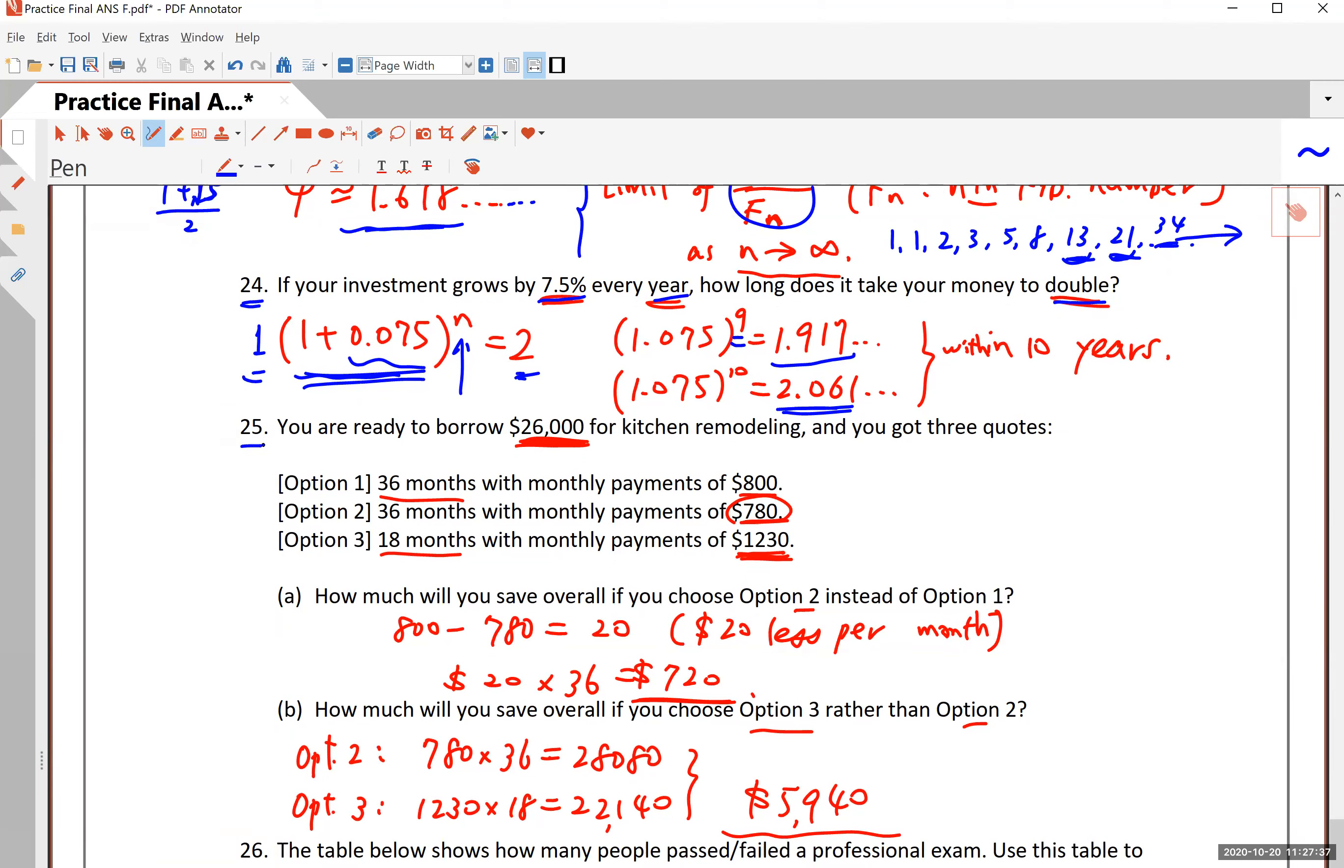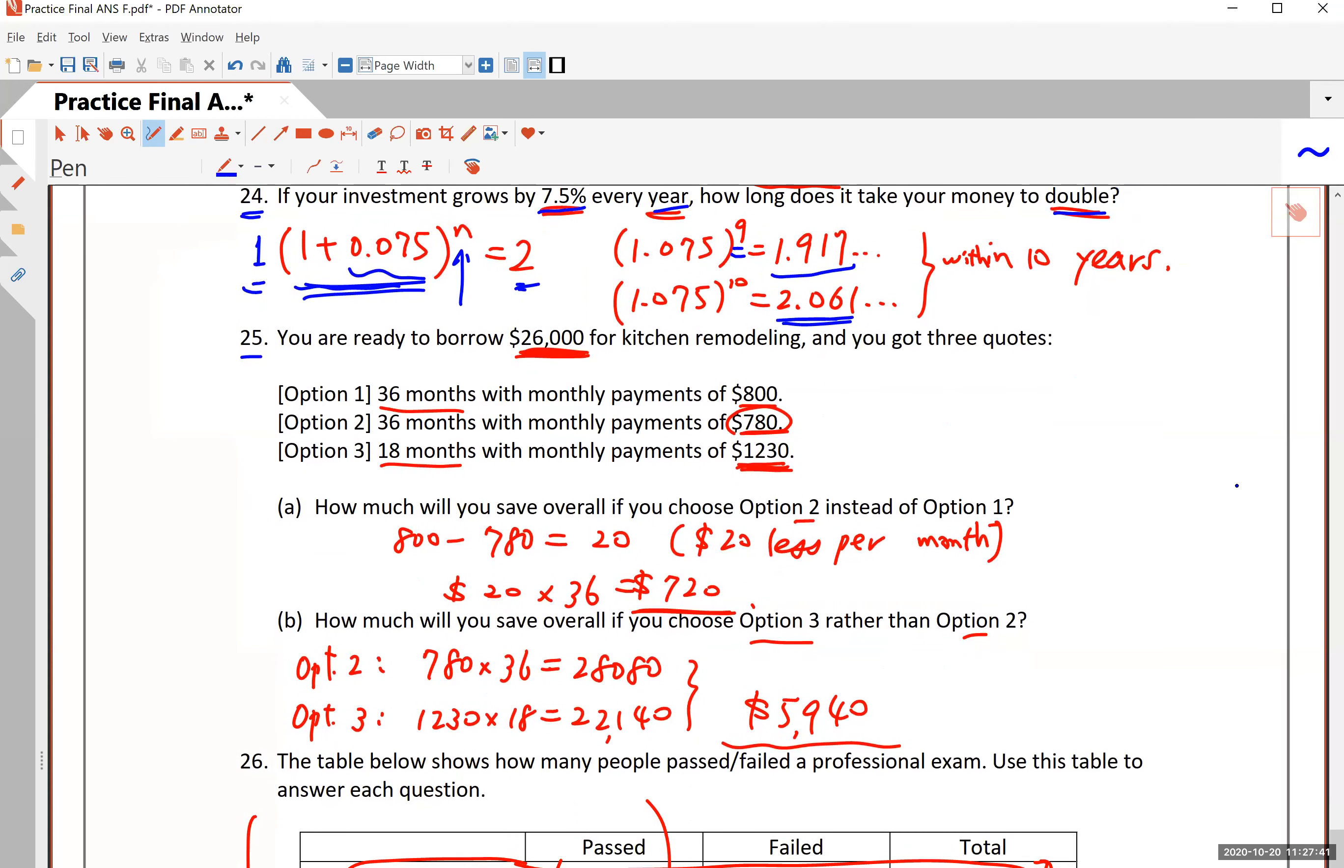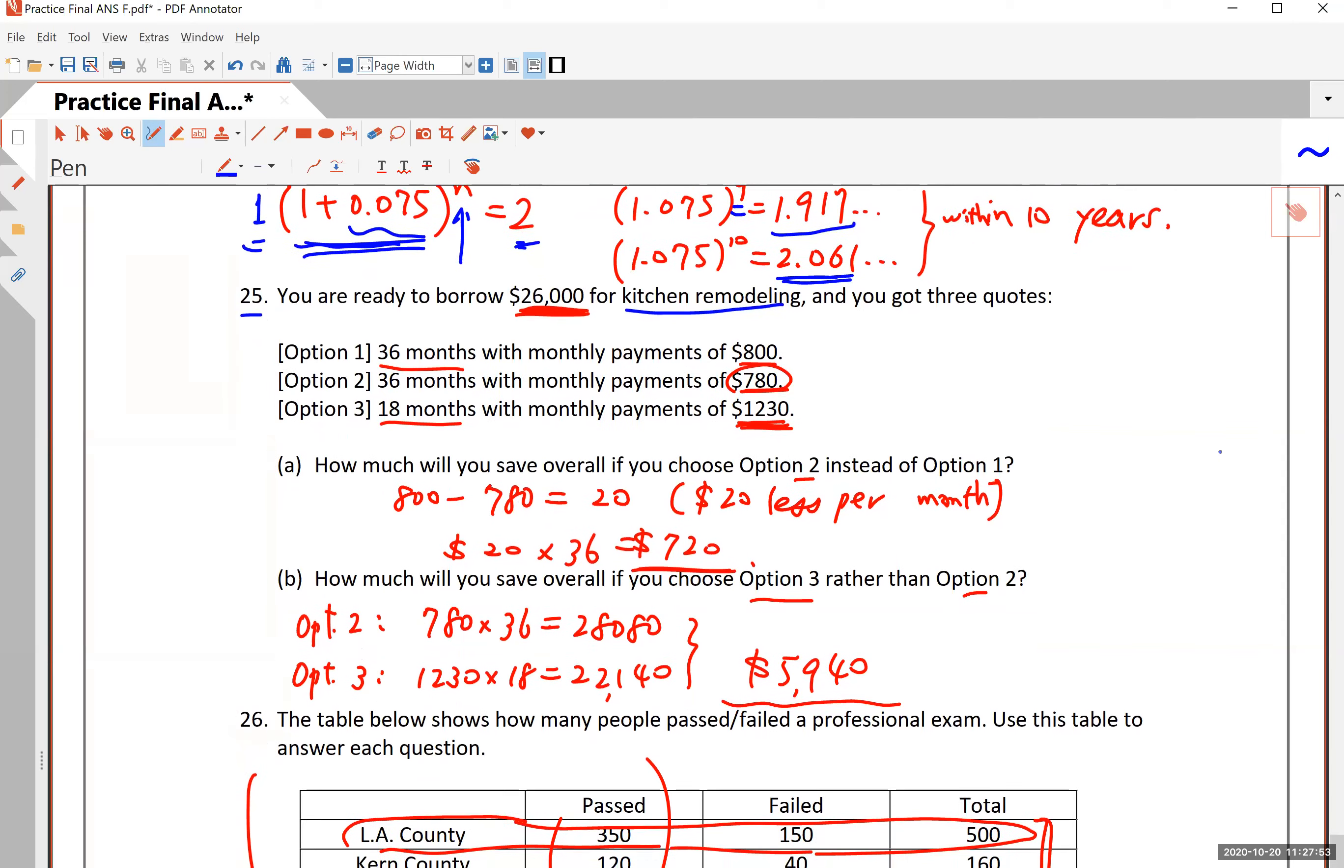Number 25, you have three options. You are ready to borrow $26,000 for kitchen remodeling. And then you get three quotes. Option one is 36 months, you pay a monthly payment of $800 a month. Option two, 36 months, you pay $780 a month. Clearly, this is better than the first one. Or option three, 18 months. That's half of option one or two. But you have to pay more every month, $1,230.